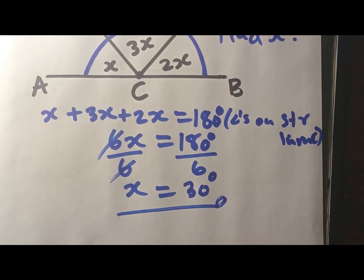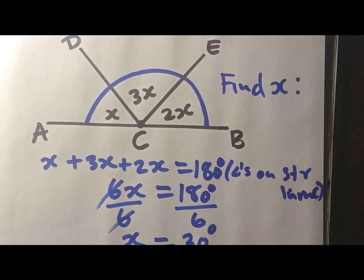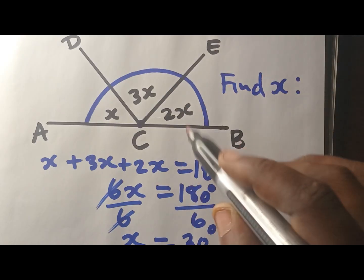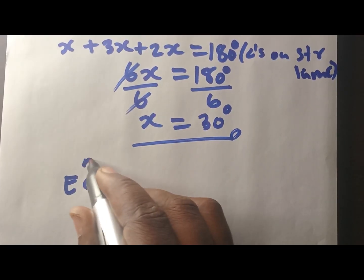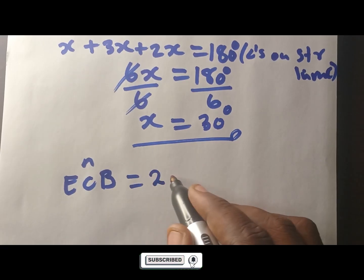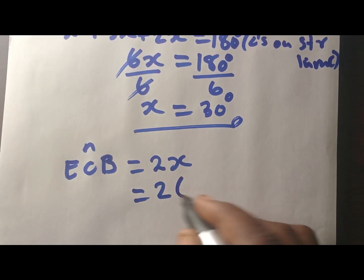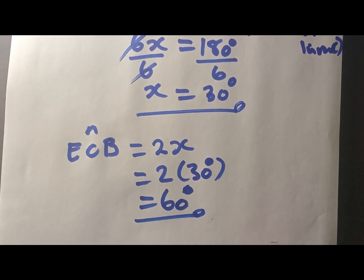Sometimes they say find X and then also ask you to find another specific angle. For example, they ask you to find angle ECB. What is this one? This one is going to be 2x. So you say 2 times x, and since x is 30, this angle is going to be 60 degrees. You do that for all angles if they want all of them, but here they only want this one.